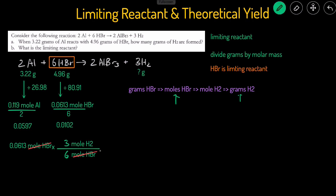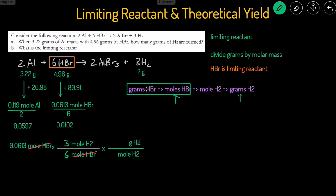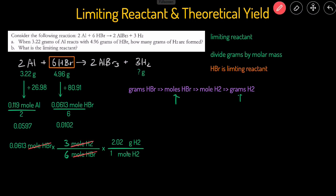Now we convert moles of H2 to grams of H2 by multiplying by another conversion factor. Moles of H2 goes on the bottom to cancel, and grams of H2 goes on top. When converting between grams and moles, use the molar mass. The molar mass of H2 is approximately 2.02 grams per mole. Note: you only use the coefficients from the balanced reaction for mole-to-mole conversions, not here. The final calculation is 0.0613 × (3/6) × 2.02, giving us 0.0619 grams of H2.